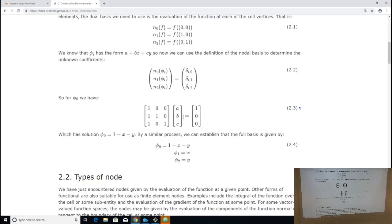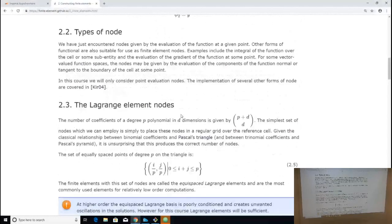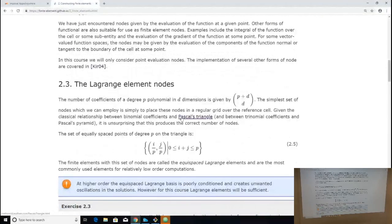Examples. So how are we going to deal with the nodes? As I said, the easiest type of node is function evaluation at a particular point. There are four real finite elements that are used in interesting contexts where the nodes are not point evaluation. The nodes are things like the integral of the function over the cell or the integral of the function on one of the edges or something like that. And so other cases exist.